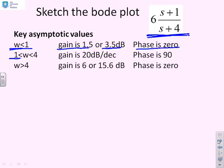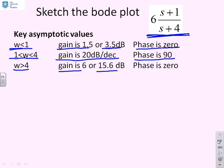If 1 is less than omega is less than 4, then we'll have a gain asymptote slope of plus 20 decibels per decade and a phase asymptote at 90 degrees. And if omega is bigger than 4, we'll have a gain of 6 from K, which is about 15.6 decibels, and a phase asymptote of 0.